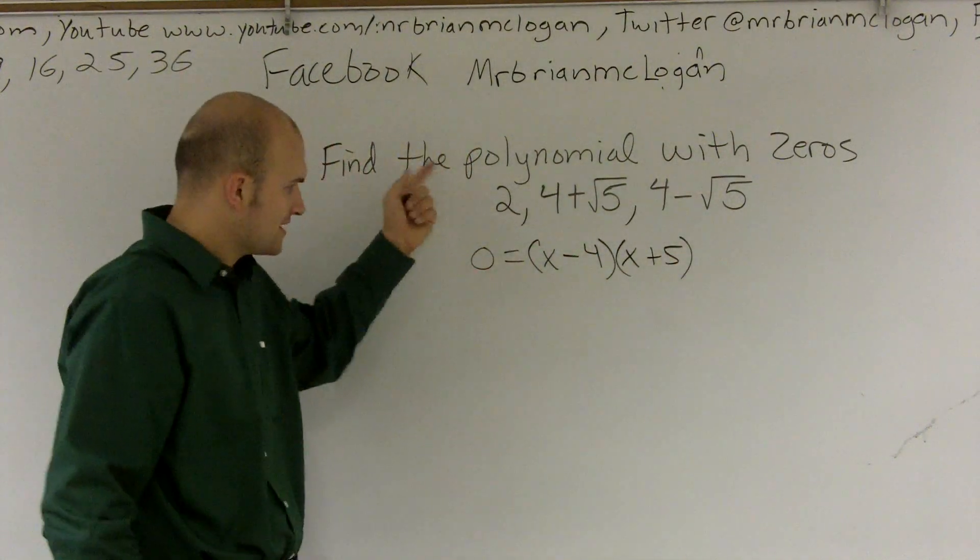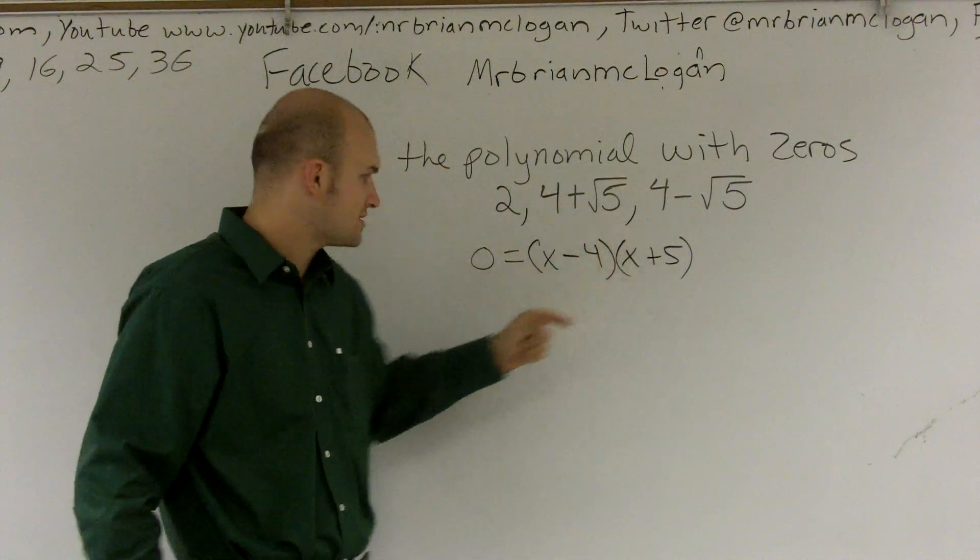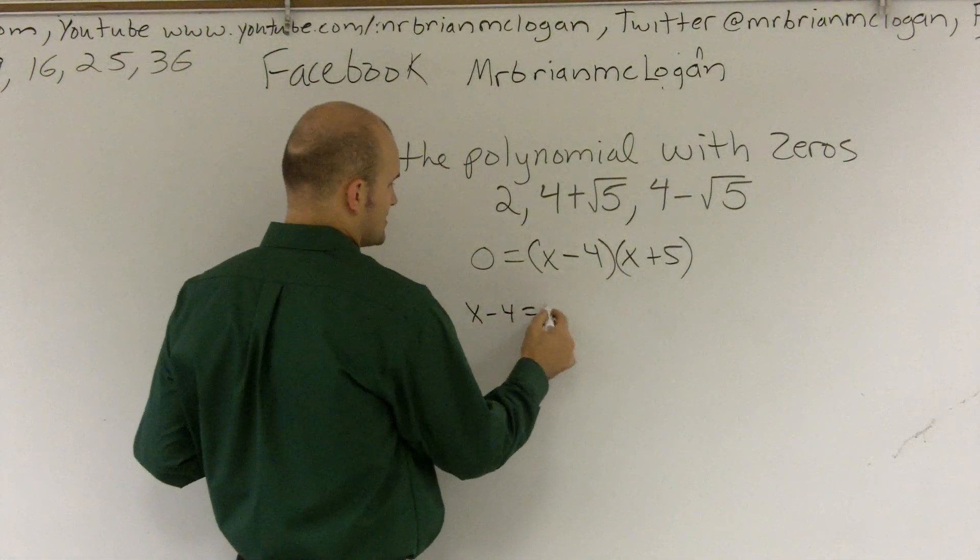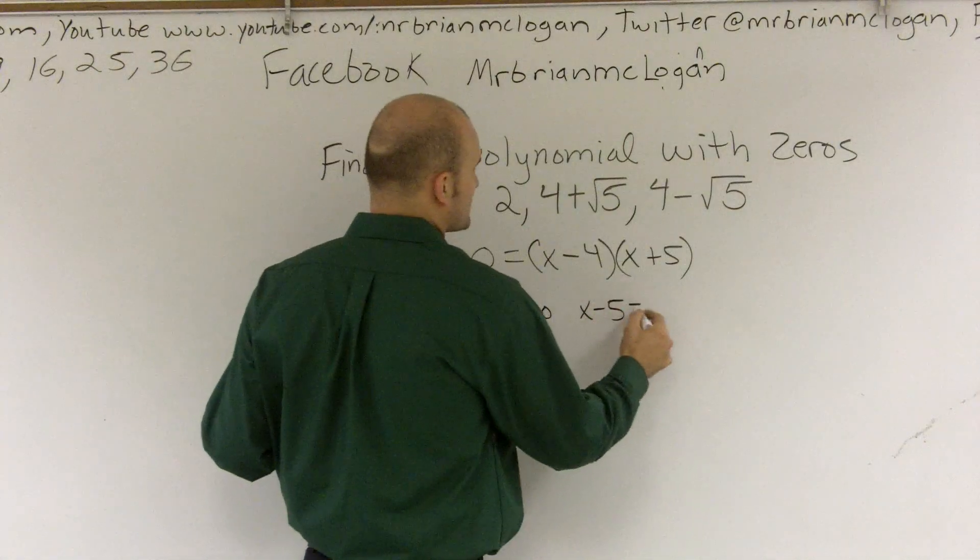And we get to a point when we factor, we get to a point like this where we're trying to find the zeros. Then we say x minus 4 equals 0 and x minus 5 equals 0, right?